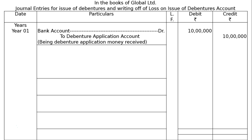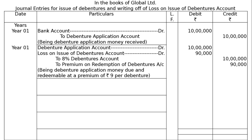Second entry in the same year: Debenture application account debited Rs 10 lakhs, loss on issue of debentures account debited Rs 90,000 — that is 10,000 debentures at Rs 9 per debenture — to 8% debentures account Rs 10 lakhs and to premium on redemption of debentures account Rs 90,000. Being debenture application money due and redeemable at a premium of Rs 9 per debenture.